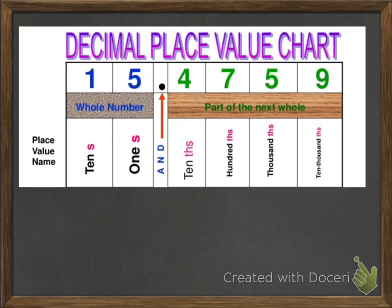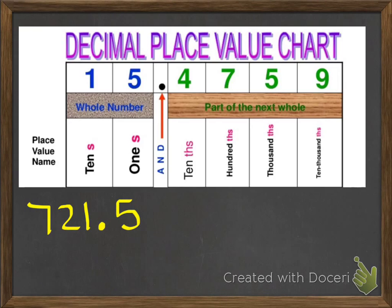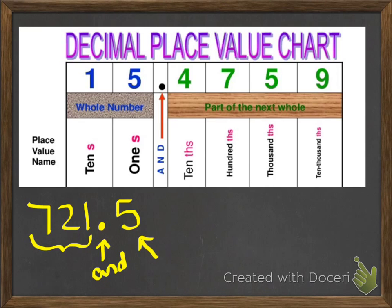For example, some people would say 15.4759, but that's not the correct way to say it. You really want to say the word "and." I think we're pretty confident reading numbers before the decimal point — for instance, this number here is 715. If I were to add a decimal point, you read the entire number up until the decimal point, then use the word "and" when you see the decimal. You name that number and give it its place value name, so 721 and 5 tenths.